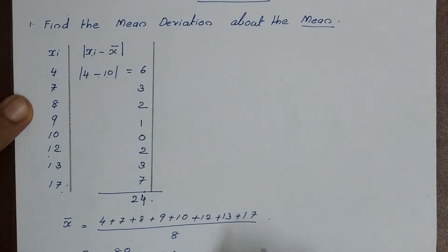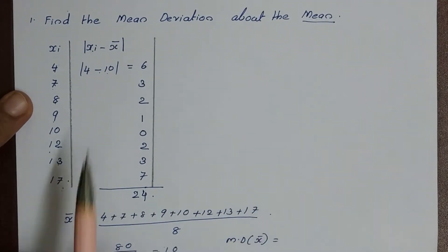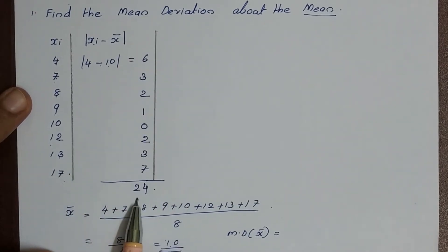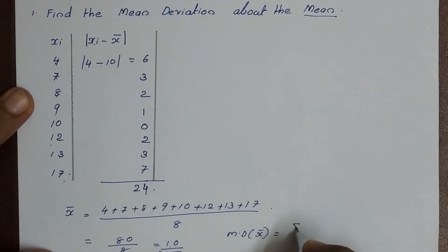Then the mean deviation about the mean equals the summation from i=1 to 8 of |xi minus x-bar|, which gives us a total of 24 divided by 8.